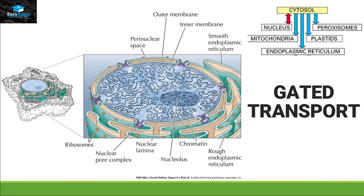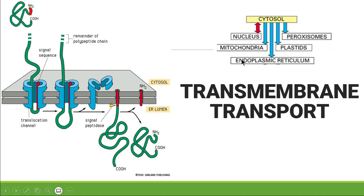Gated transport usually occurs in the nucleus, because the transport of protein occurs through a gate called the nuclear pore complex. Transmembrane transport occurs in the mitochondria, endoplasmic reticulum, plastids, and peroxisomes. In this type of transport, we have translocation channels located on the outer membrane of each organelle, or transmembrane proteins, that help certain proteins enter that organelle.